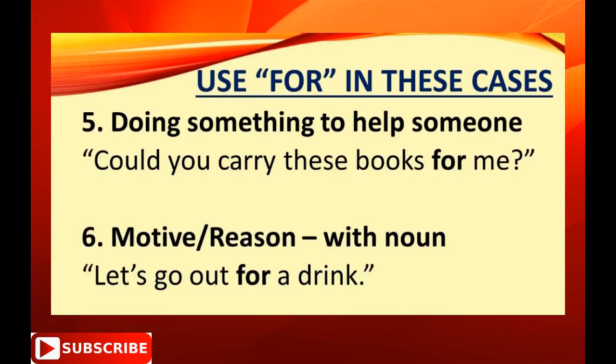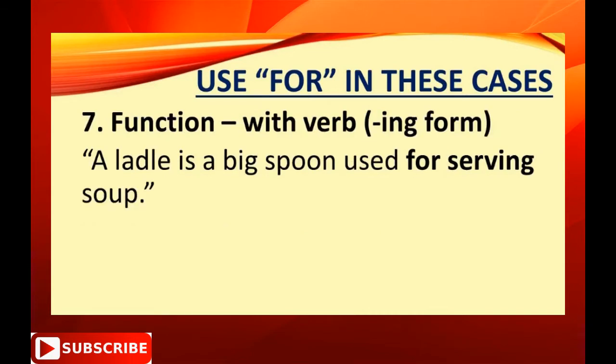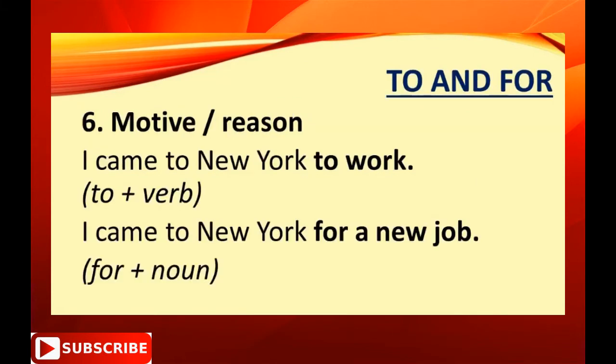Use 'for' for function with the verb in the -ing form — for example, 'A ladle is a big spoon used for serving soup.' Let's take a closer look at examples six and seven, when talking about a motive or reason.